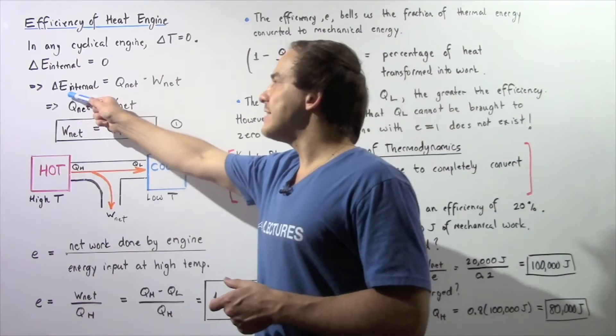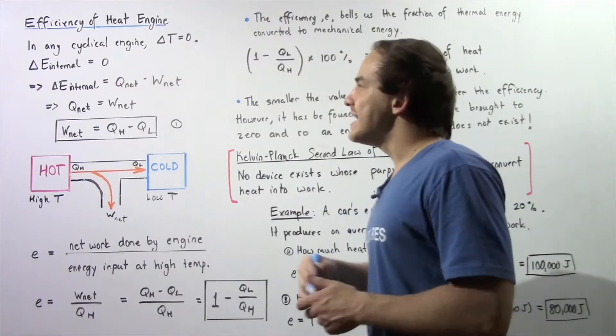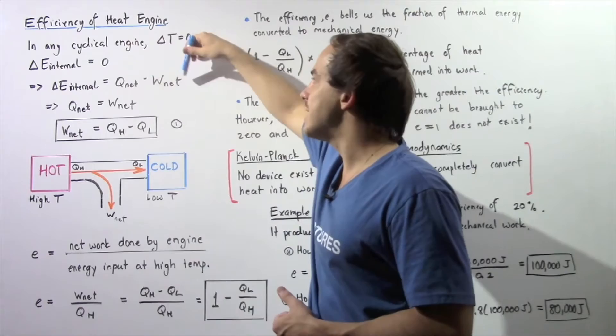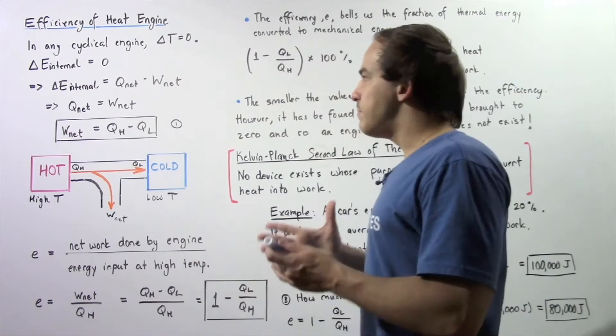According to the second law of thermodynamics, the change in internal energy of our system is equal to the net heat flow into our system minus the net work done by our system on the surroundings. Because delta internal energy is zero, we have zero is equal to net Q minus net W. Rearranging this equation, we get the result that Q_net is equal to W_net.